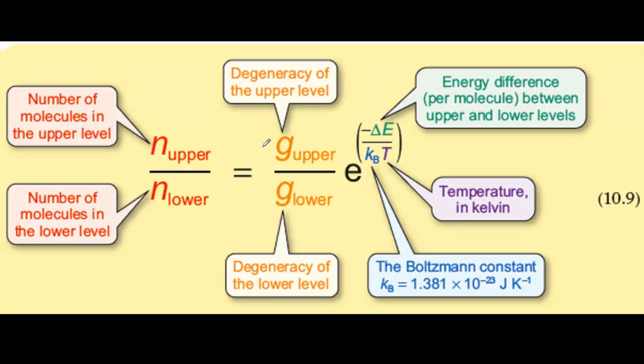Now let's look at the form of Equation 10.9. First, we have the ratio of the degeneracies of the upper and lower energy levels. Remember, degeneracy of an energy level is the number of distinct states within that level. So if there's only one state with that energy, the degeneracy g is 1.